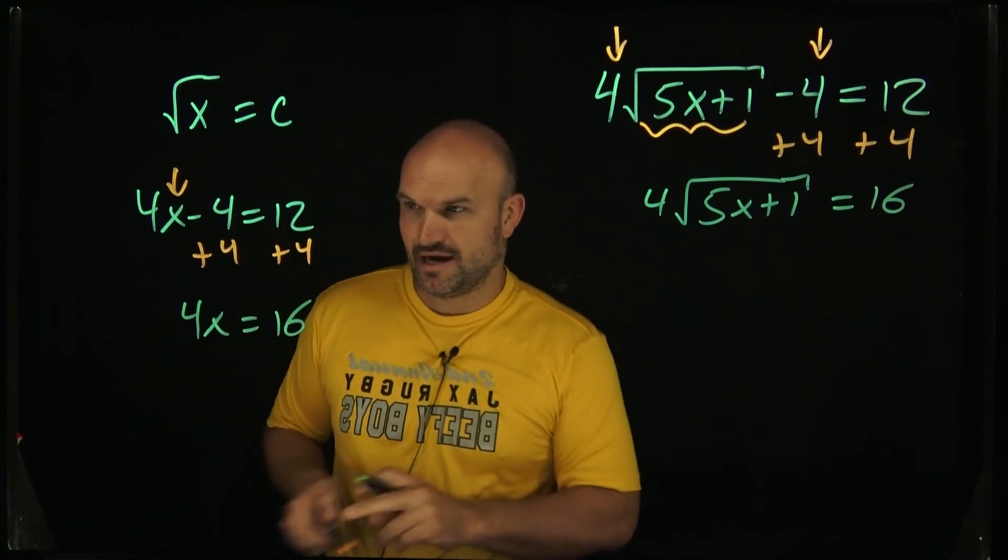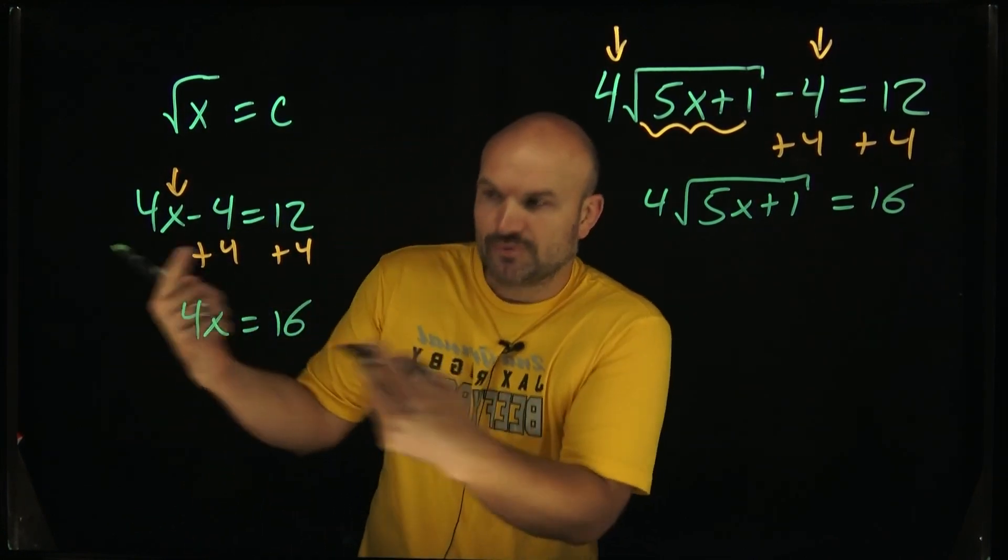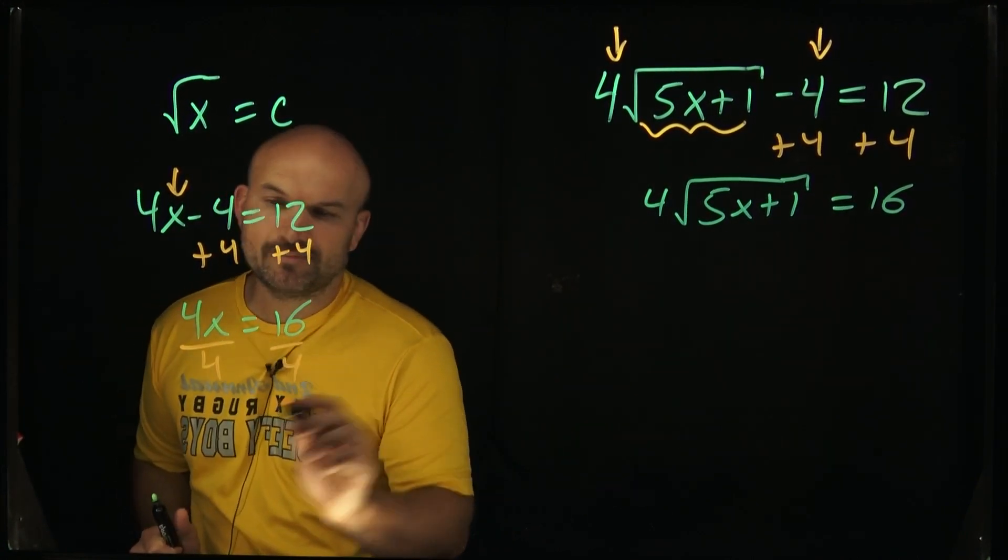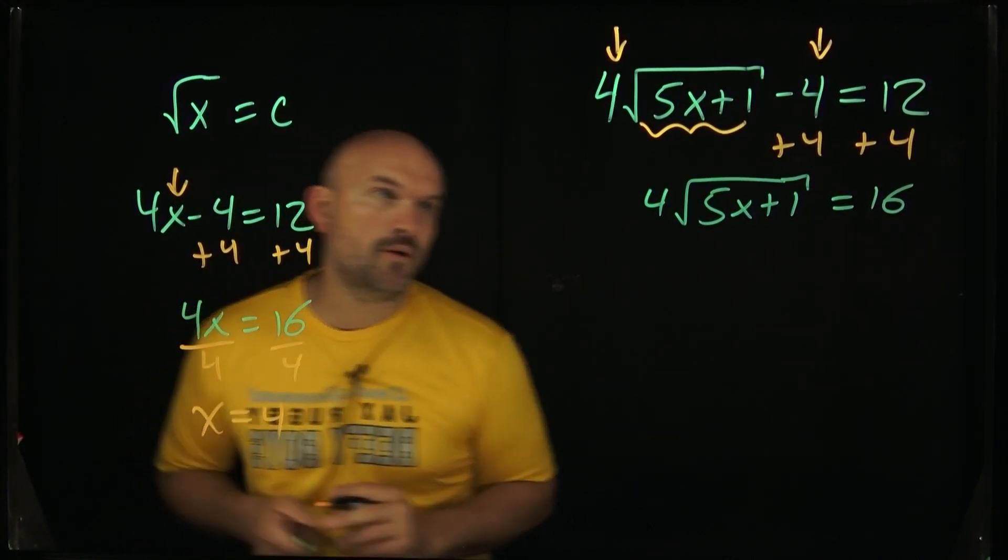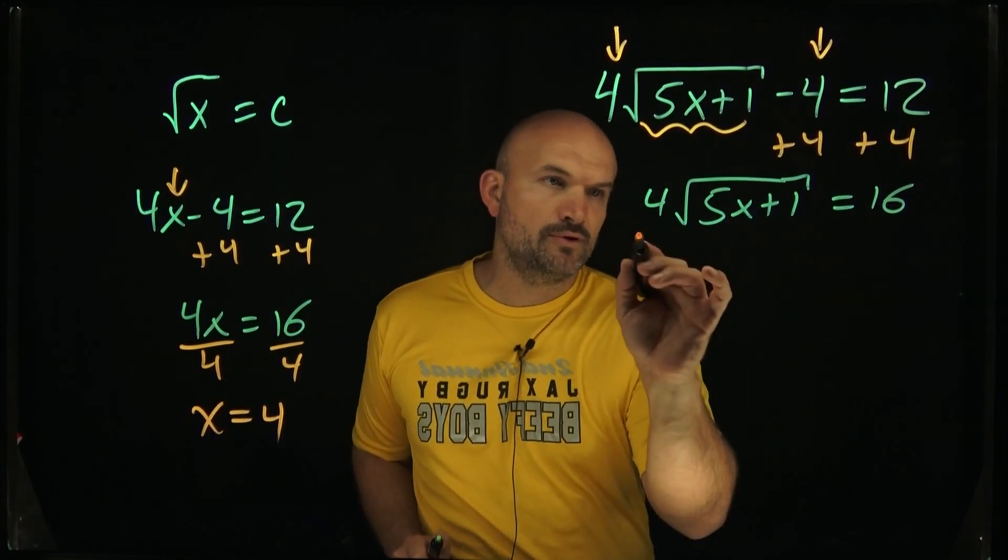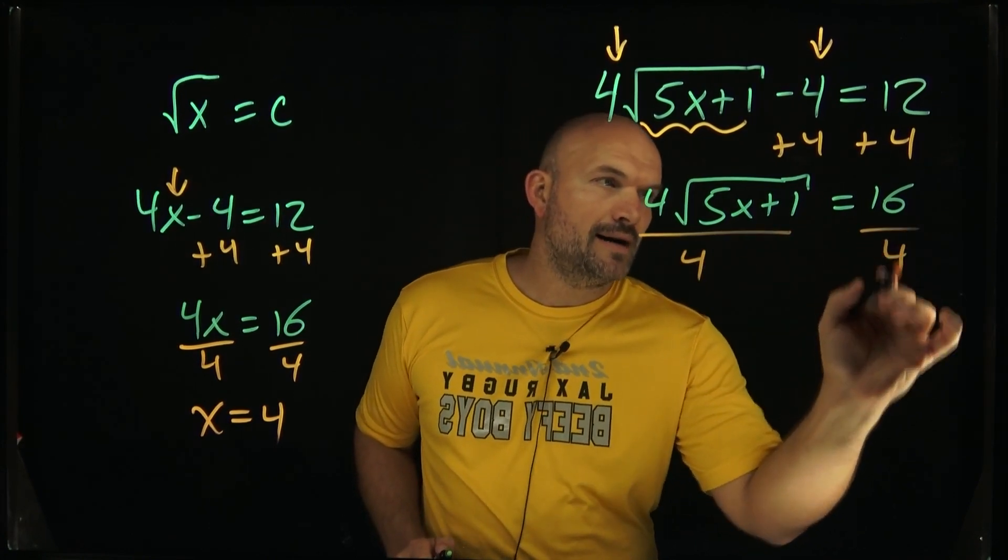So then the next thing we're now going to do is say, all right, well, if I need to undo multiplication by 4, I need to divide by 4. So you're going to divide using what we call the inverse operation. So that would be x is equal to 4. So over here, we need to undo multiplying by 4 by this radical function. So I'm going to divide by 4 on both sides.